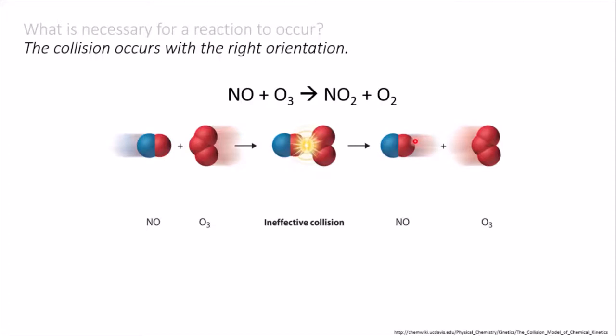Or the nitrogen end of the NO could bump into the ozone. This looks promising, but it's bumped into the central oxygen in the ozone, and it's unlikely that this will break bonds to both of the other oxygens. So again, the molecules bounce off and continue on.